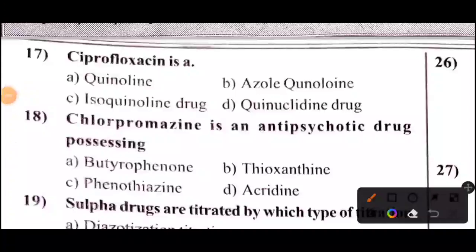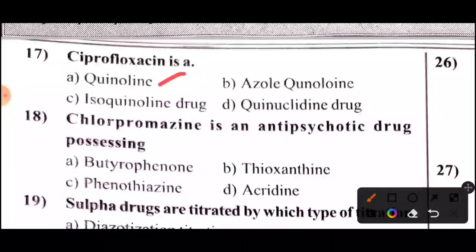Question 17: Ciprofloxacin is — Option A — Fluoroquinolone. Question 18: Chlorpromazine is an anti-psychotic drug possessing — answer provided.